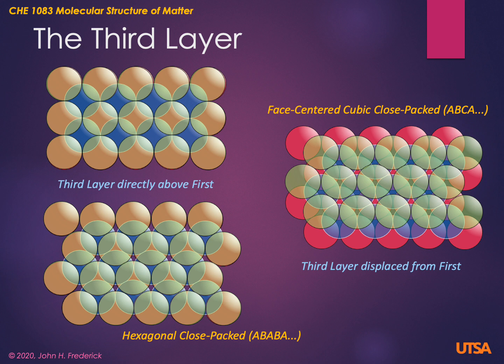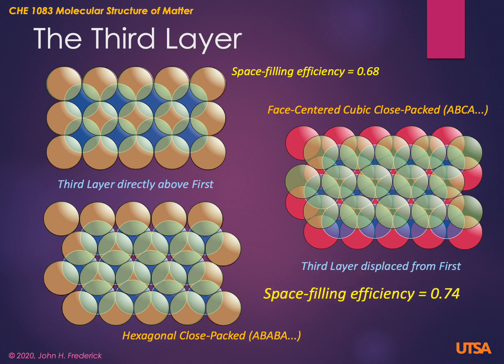Both the hexagonal close-packed and the face-centered cubic close-packed are very efficient space-filling strategies. The space-filling efficiency of the rectangular array is 0.68, which is still better than a sphere in a cubic box. But the space-filling efficiency of the hexagonal arrays is 0.74 — a much greater efficiency — and this is in fact the best possible three-dimensional space-filling efficiency for a group of spheres.